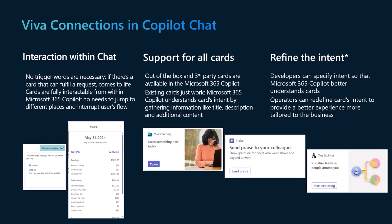So let's say that you have Viva Connections in your environment, you've invested very heavily in it, you have custom cards that are very successful and surfaced in the Viva Connections dashboard. But at one point, what if you could reuse those cards even further — for example, in Copilot and in the Copilot chat experiences? Similar to the messaging extensions we saw before, a bunch of work we've done recently is teaching Copilot that there is this thing called Viva Connections, it has a dashboard, and there are a bunch of cards available for that dashboard.